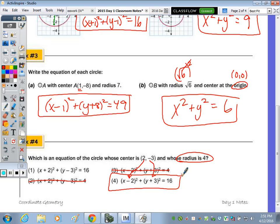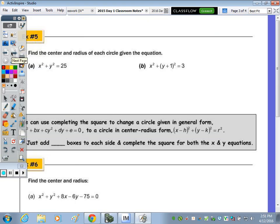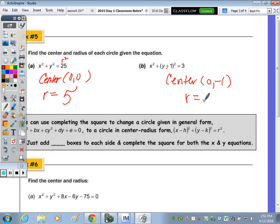Now we're going to go backwards, instead of writing the equation given the center and radius, we're now going to, given the equation, note what the center and radius is. So for part A, where it's x squared plus y squared, Autumn, what's the center? 0, 0, right at the origin. Radius, remember this is your r squared, what squared gives you 25? 5. The one on the right, the center is going to be 0, negative 1. And the radius, what's going to be the radius?